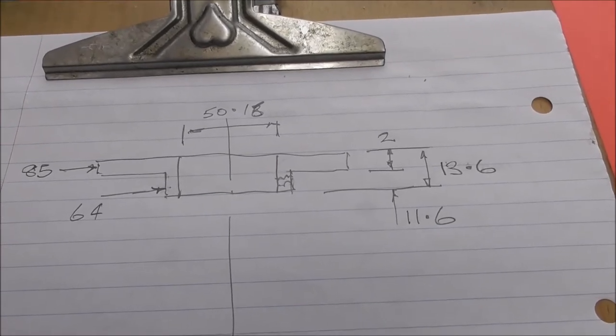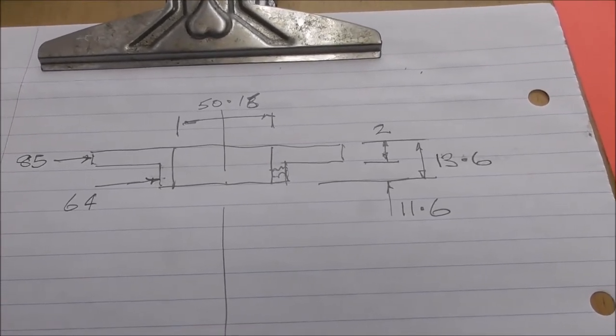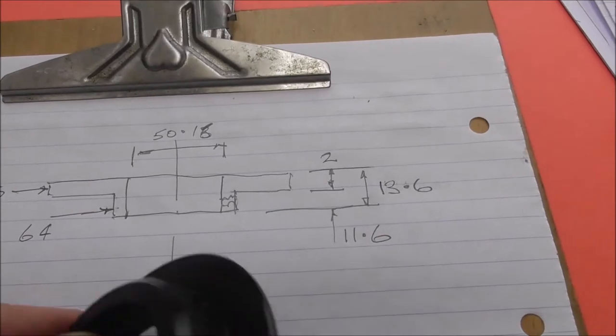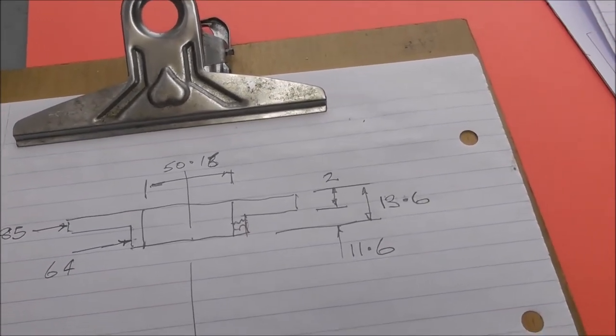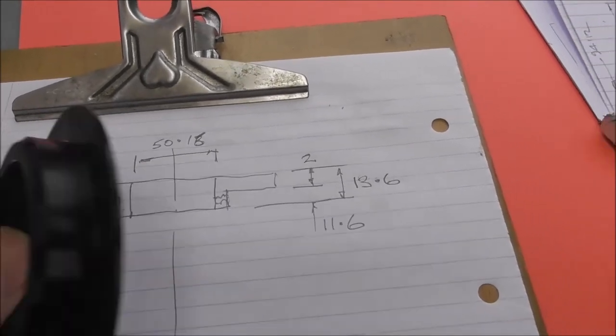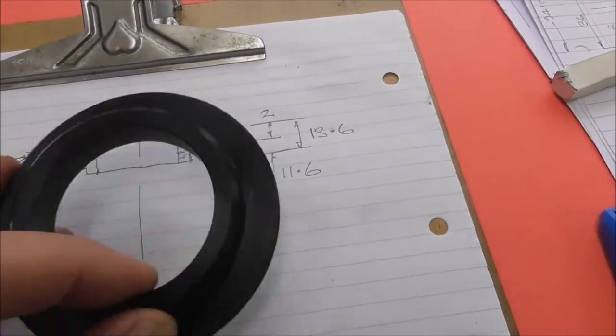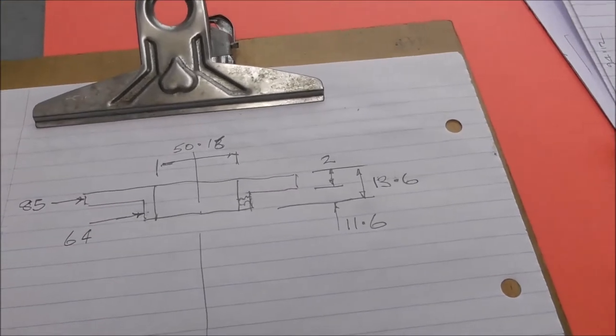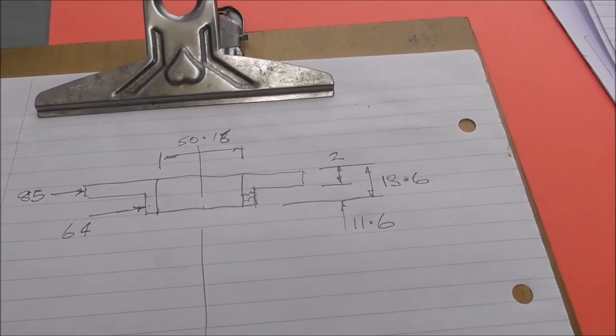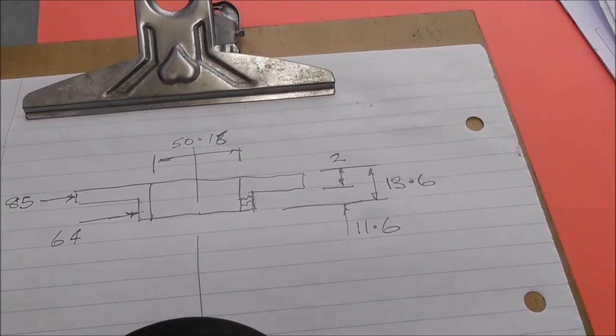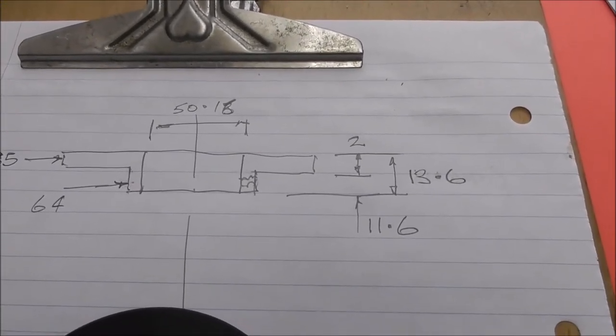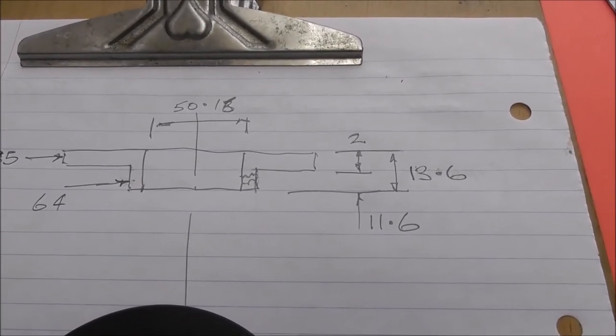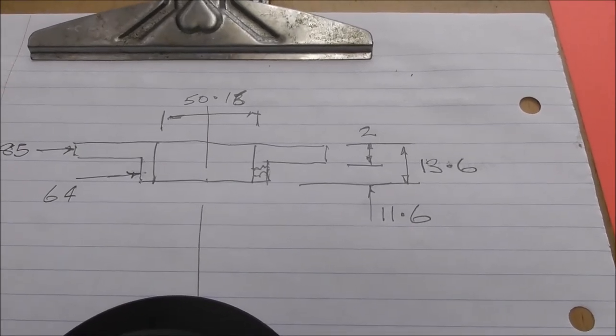These are the approximate dimensions: just below 85 millimeters outside diameter with a flange on there, I just went for 2 millimeters wide. The bore is about 50.16 and enough of a section to take grub screws of about 64 millimeters diameter and not too much length, only 13.6, so it doesn't protrude below the bottom of the spindle nose.